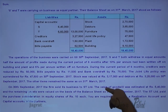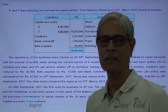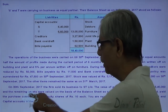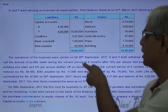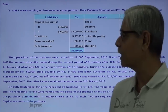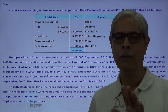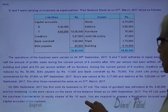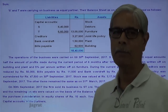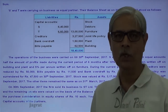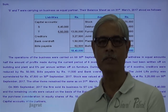On 30th September 2017, the firm sold the business. Goodwill was estimated to be 5,40,000. The remaining assets were valued on the basis of the balance sheet as on 30th September 2017. All assets are purchased by the company at the values disclosed in that balance sheet. The purchase consideration is paid in equity shares. We are required to prepare the realization account and capital accounts of the partners, as the partnership firm gets dissolved upon conversion into a company.